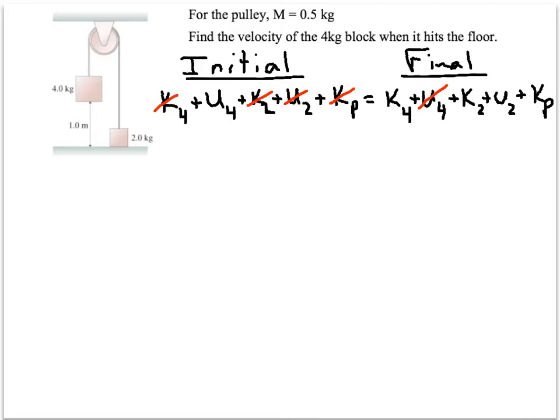Now, let's go through and plug in some equations here. We'll have our MGH for our 4 kilogram block. For our initial side, final side, we're going to have 1 half MV squared for our 4 kilogram block, plus 1 half MV squared